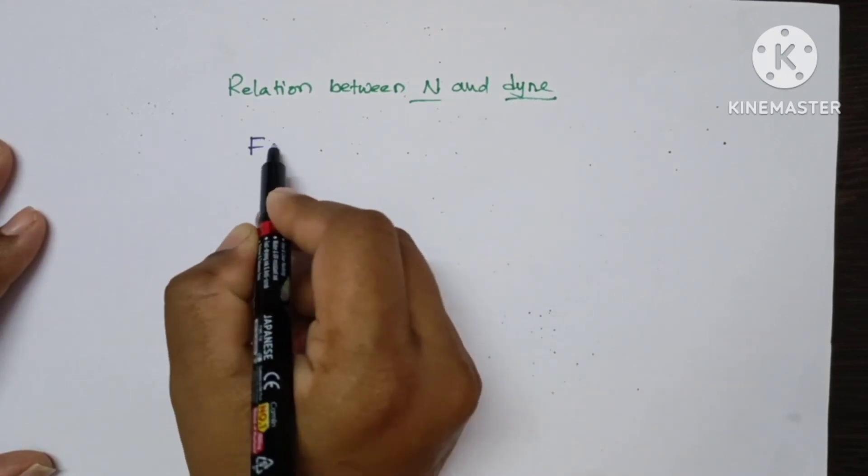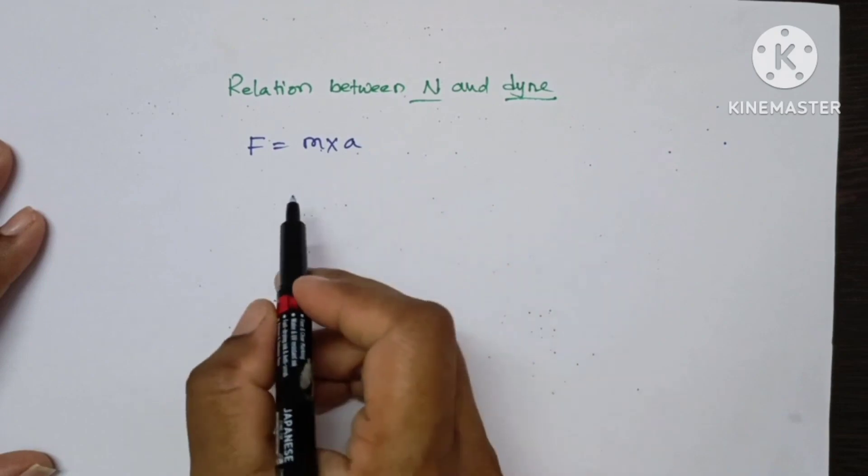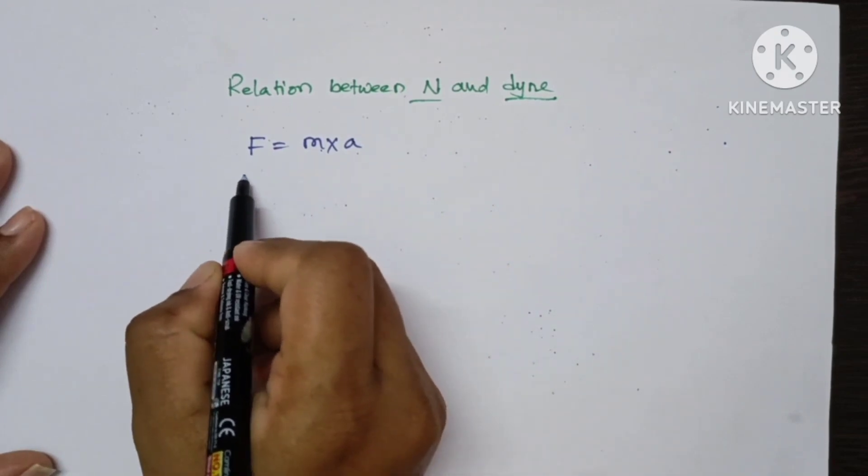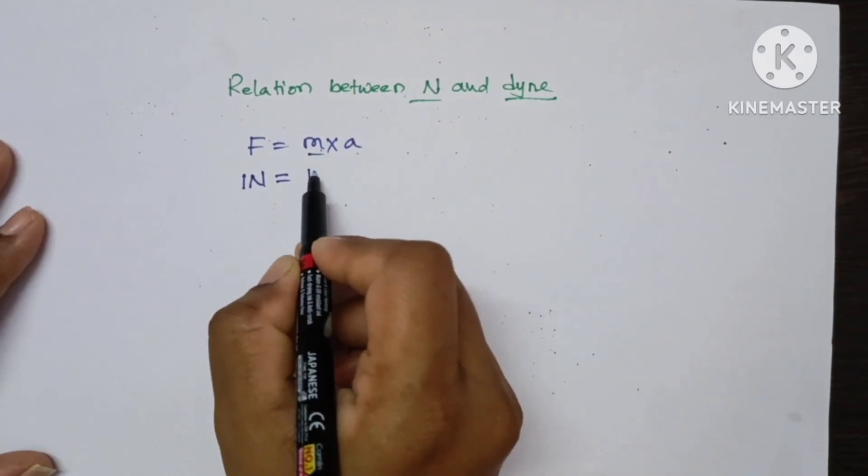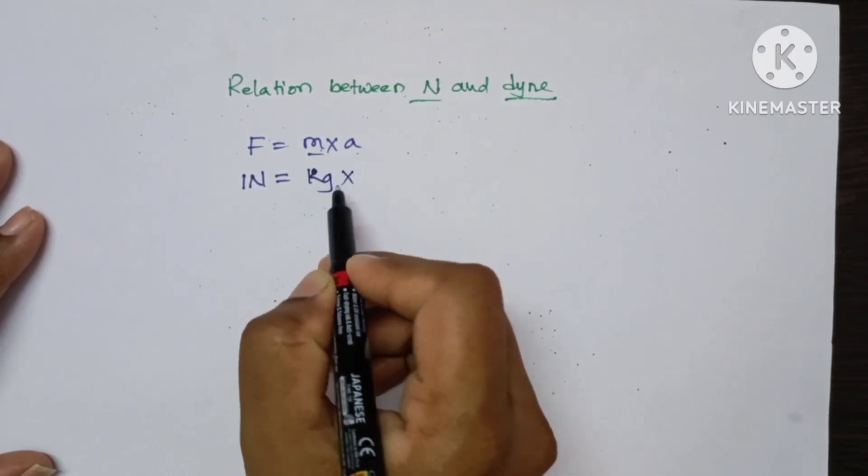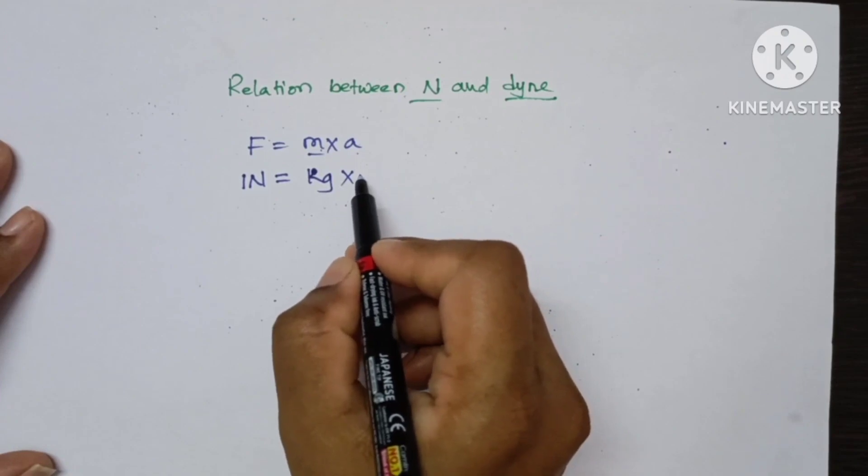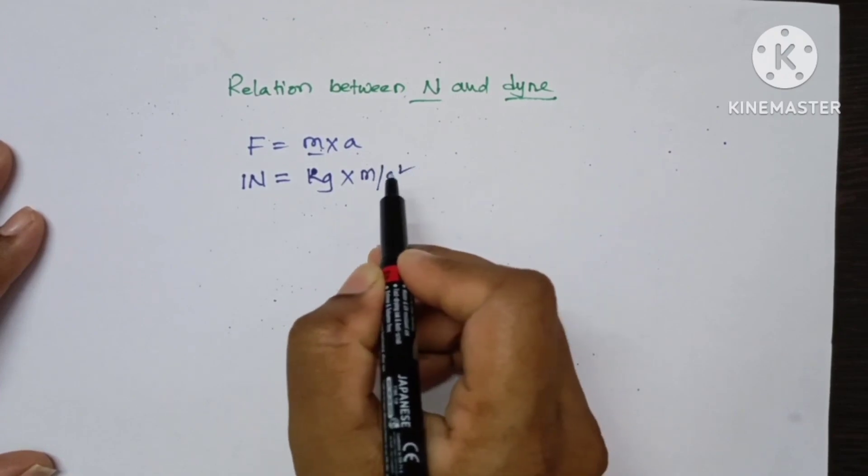We know that force is equal to mass into acceleration. The SI unit of force is 1 Newton, the SI unit of mass is kilogram, and the SI unit of acceleration is meter per second square.